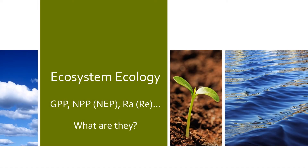In this first talk we'll discuss the difference between gross primary production, net primary production, net ecosystem production, and respiration of autotrophs, or in terms of an ecosystem, respiration of the ecosystem. We'll basically be going through the definitions and describe what each one means.